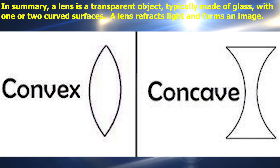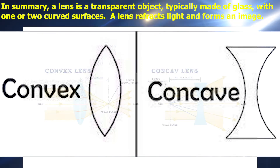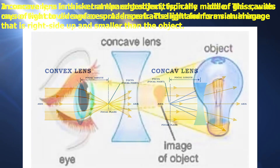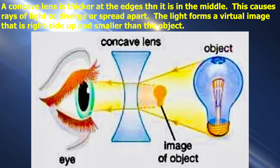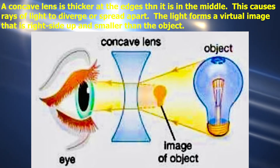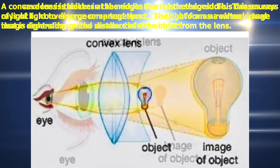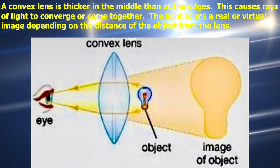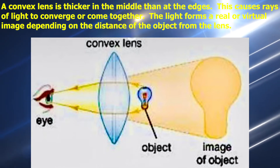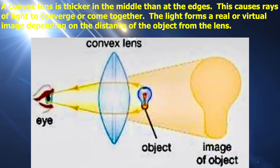In summary, a lens is a transparent object typically made of glass with one or two curved surfaces. A lens refracts light and forms an image. A concave lens is thicker at the edges than it is in the middle — this causes rays of light to diverge. The light forms a virtual image that is right side up and smaller than the object. A convex lens is thicker in the middle than it is at the edges — this causes rays of light to converge. The light forms a real or virtual image depending on the distance of the object from the lens.